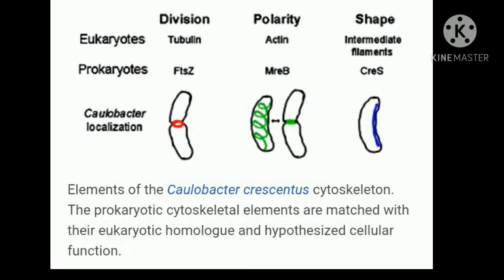Cytoskeleton. Eukaryotic cells contain numerous structures lacking a surrounding membrane, which include elongated tubules and filaments of the cytoskeleton that participate in cells' contractility, movement, and support. The prokaryotic cytoskeleton is much simpler both structurally and functionally than that of eukaryotes.